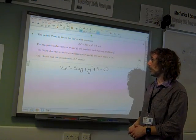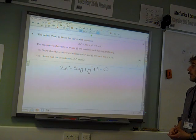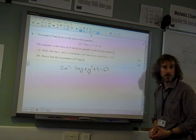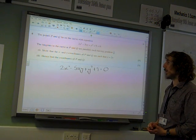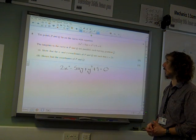The tangents to the curve at P and Q are parallel, each having gradient 3/8. Show that the x and y coordinates of P and Q are such that x equals 2y.